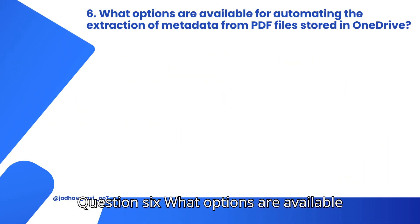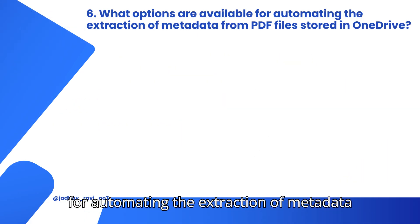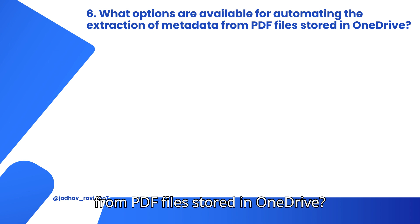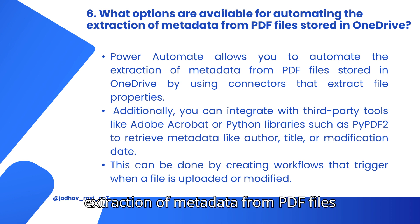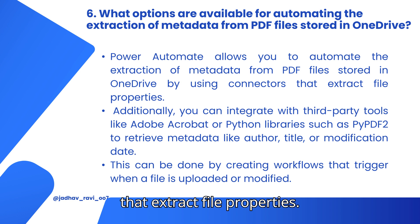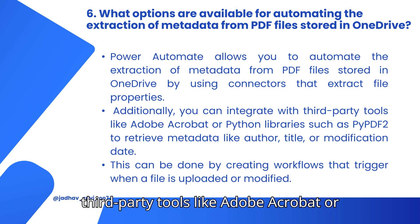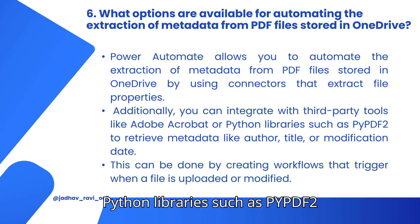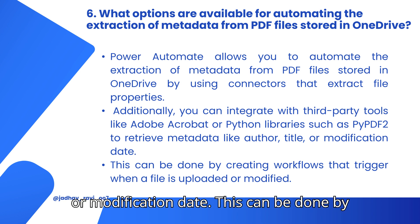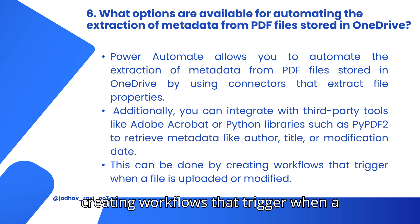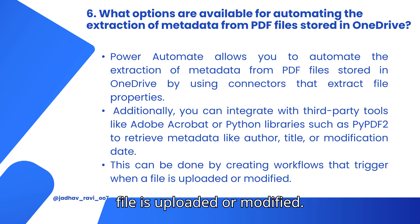Question 6: What options are available for automating the extraction of metadata from PDF files stored in OneDrive? Power Automate allows you to automate the extraction of metadata from PDF files stored in OneDrive by using connectors that extract file properties. Additionally, you can integrate with third-party tools like Adobe Acrobat or Python libraries such as PyPDF2 to retrieve metadata like author, title, or modification date. This can be done by creating workflows that trigger when a file is uploaded or modified.